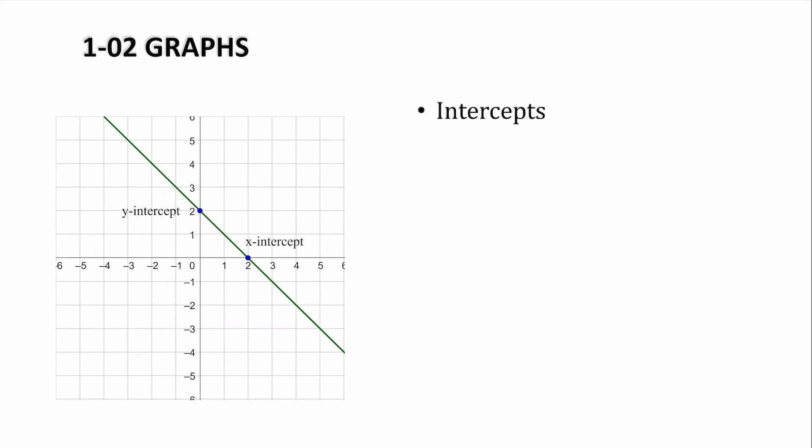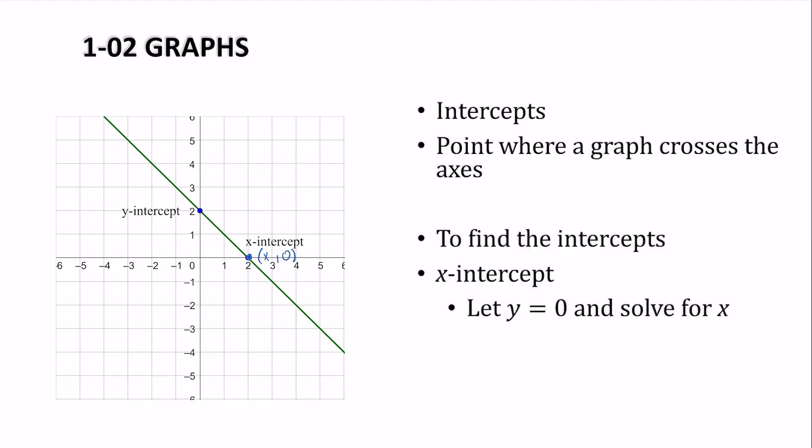There are some parts of graphs. We have the intercepts. The intercepts are the points where a graph crosses the axes. So at the x-intercept point here, it is whatever the x is and up and down 0. So to find the x-intercept, you'd let y equal 0 and solve for x. Likewise, for the y, it's over 0 and up whatever the y-intercept is. So we could let the x be 0 and solve for y.